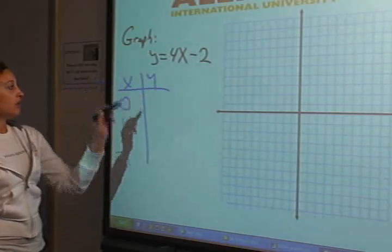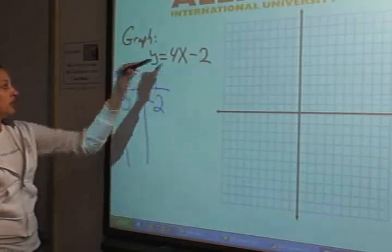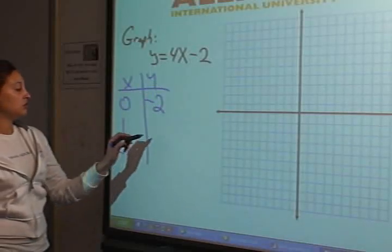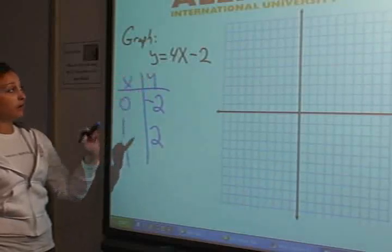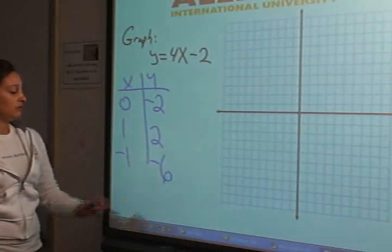0 times 4 is 0, minus 2 gives us negative 2. 1 times 4 is 4, minus 2 is 2. And negative 1 times 4 is negative 4, minus 2 is negative 6.